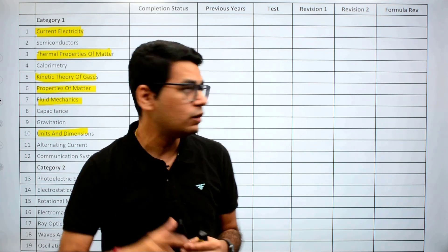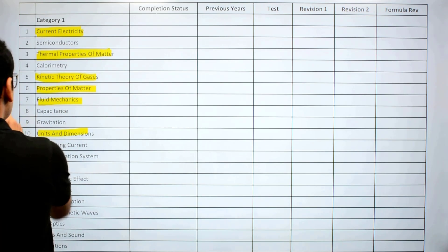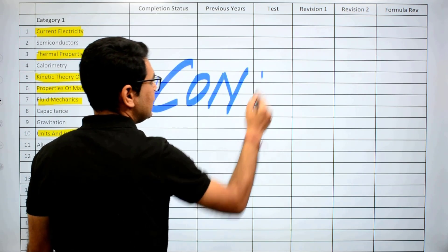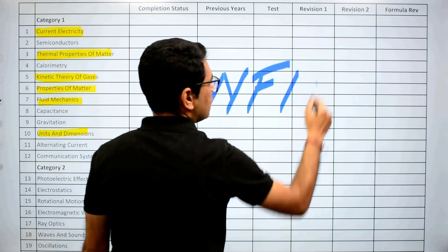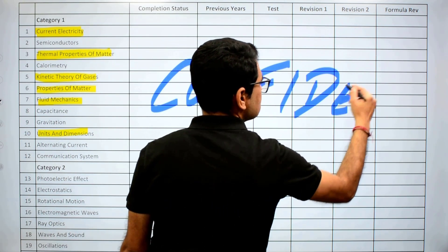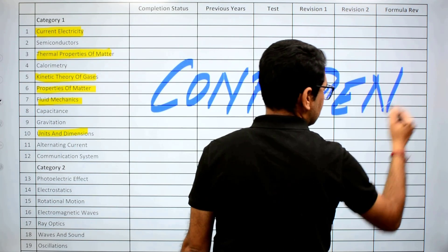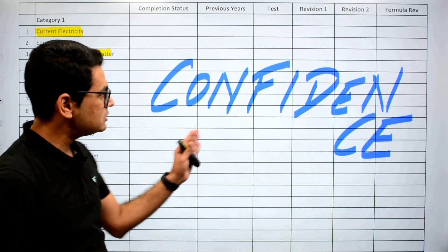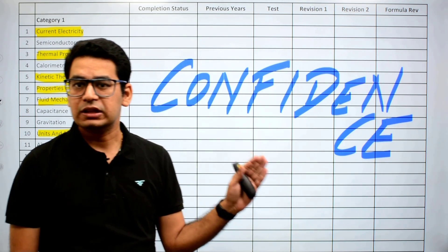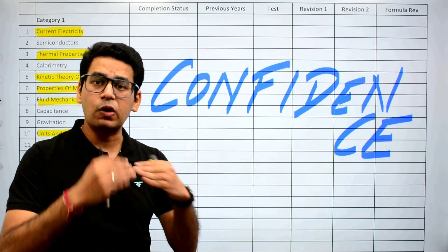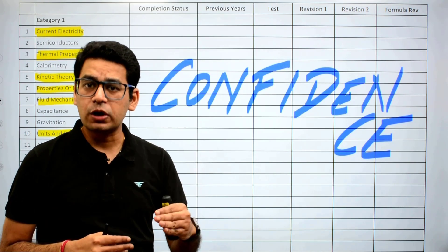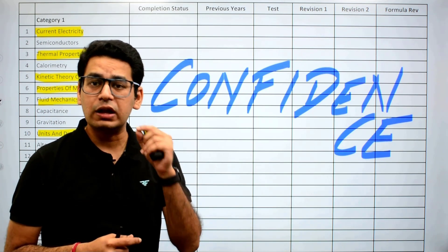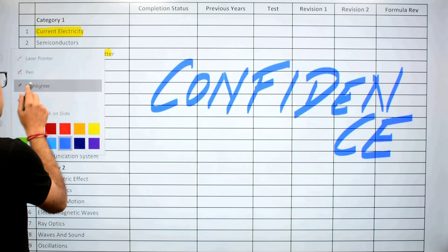This is also a confidence game — this is your confidence tool. It is basically for your confidence, so you can say 'yes, I have covered so much.' Make sure that even if you are not able to complete the entire list, at least you are able to cover 70% of it.